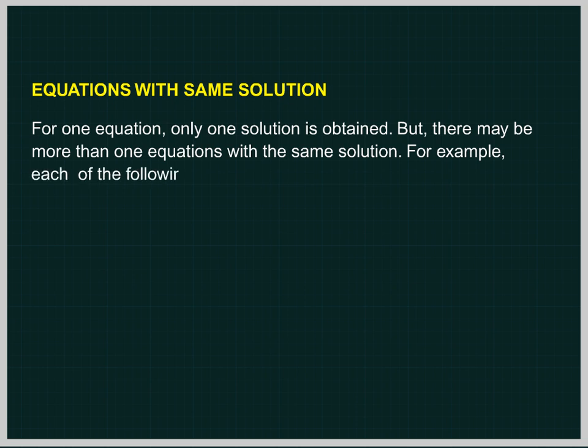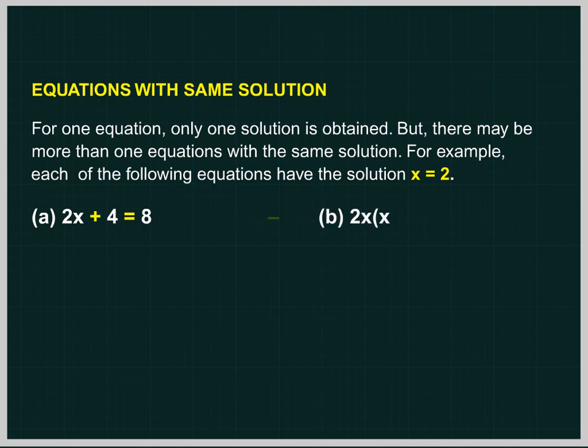For example, each of the following equations have the solution x equal to 2. 2x plus 4 equal to 8. 2 multiplied by x minus 4 within round brackets equal to minus 4.